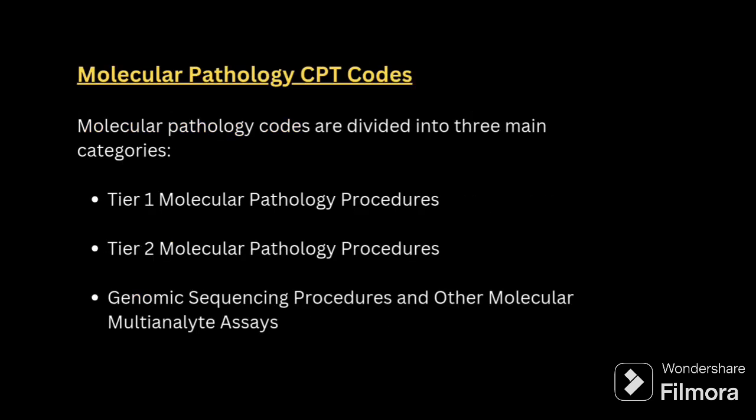Molecular pathology CPT codes are divided into three main categories: Tier 1 molecular pathology, Tier 2 molecular pathology, and the third one is genomic sequencing procedures and other molecular multi-analyte assays.